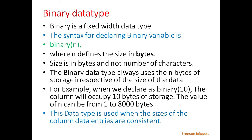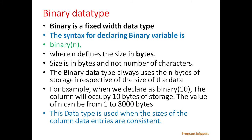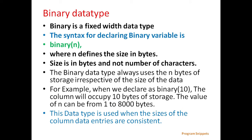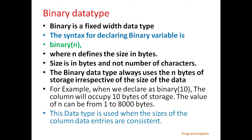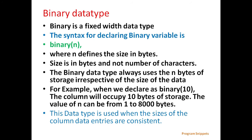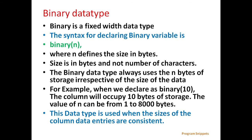First we will see Binary Data Type. Binary is a fixed width data type. The syntax for declaring a binary variable is binary(n), where n defines the size in bytes — not in number of characters. The binary data type always uses n bytes of storage irrespective of the size of the data. For example, when we declare binary(10), the column will occupy 10 bytes of storage. The value of n can be from 1 to 8000 bytes. This data type is used when the sizes of the column data entries are consistent.